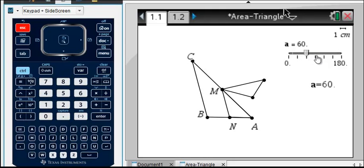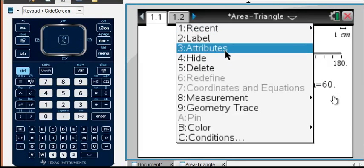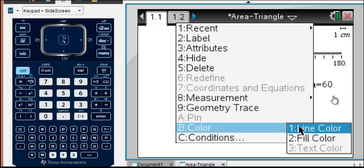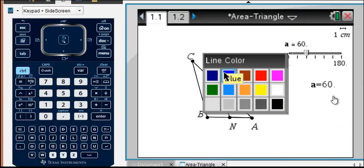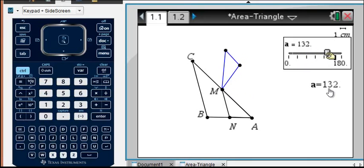Before I go ahead and finish this, I'm going to go ahead and take my triangle, which is the rotated triangle, and make it blue. Now, I'm going to rotate this all the way up to 180 degrees.